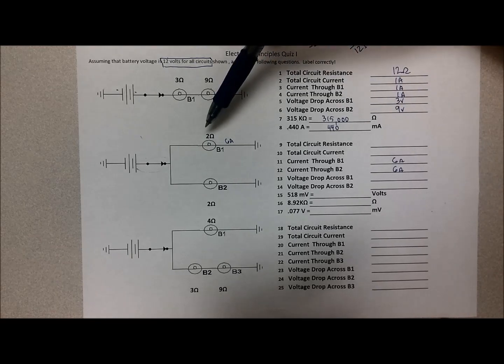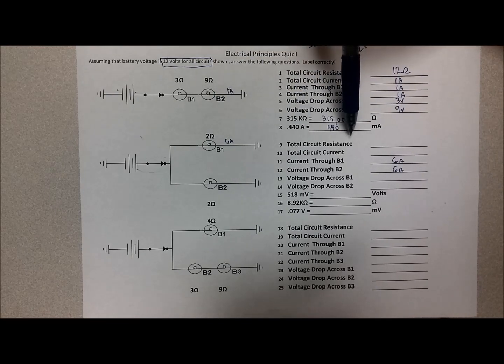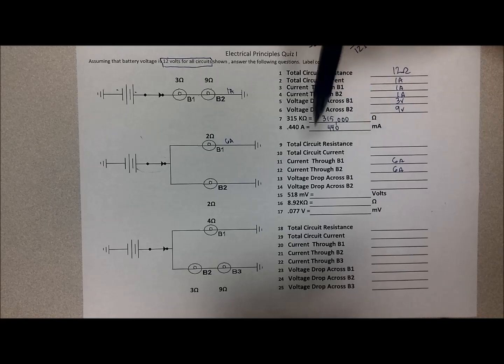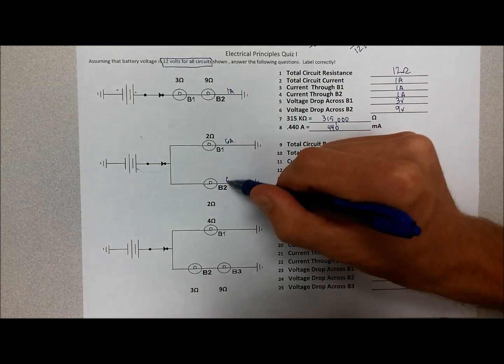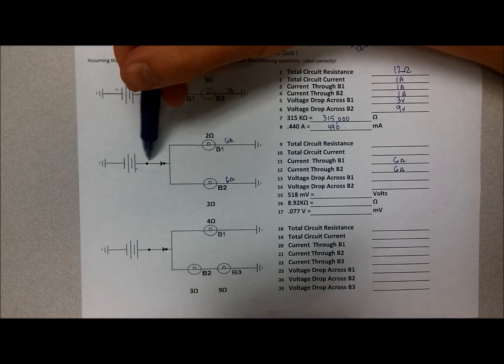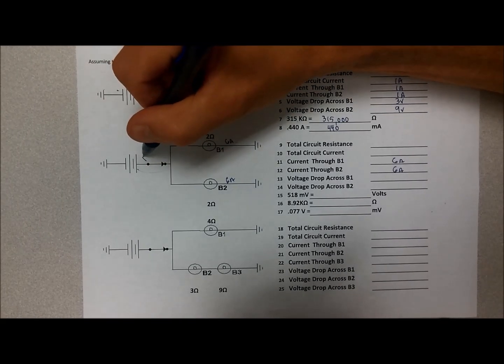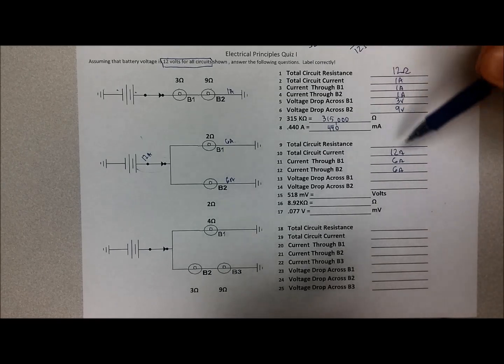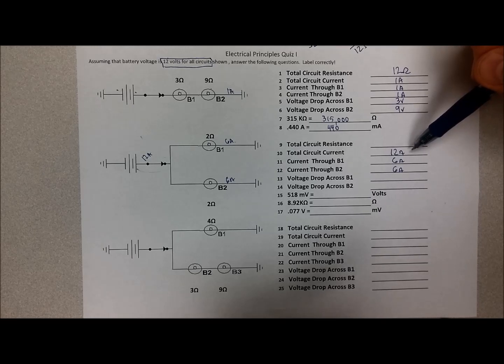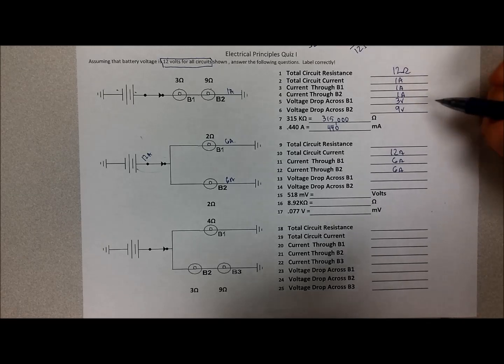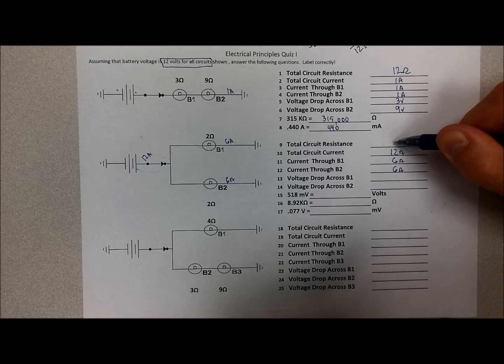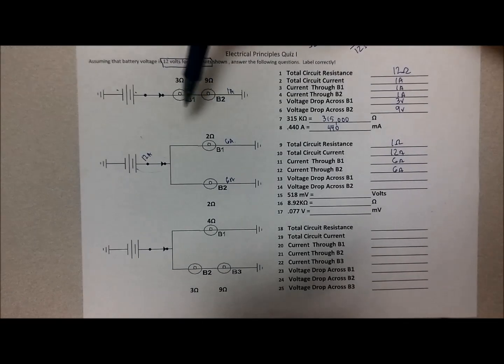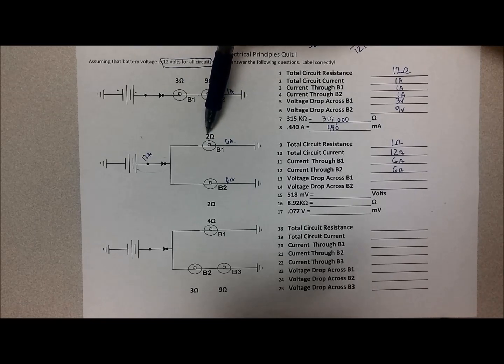Now I can go back up to the top if I want to, and I can say, okay, what is the total current here? Well, if there's 6 amps through this leg, and 6 amps through this leg, how many amps left the battery? The answer is 12 amps left the battery. So total current is 12 amps. And if total current is 12 amps, and there are 12 volts pushing that through the resistance, what is the total resistance? 12 divided by 12, it's 1 ohm. You might say, well, how did we get 1 ohm if we had 2 ohms here and 2 ohms here?